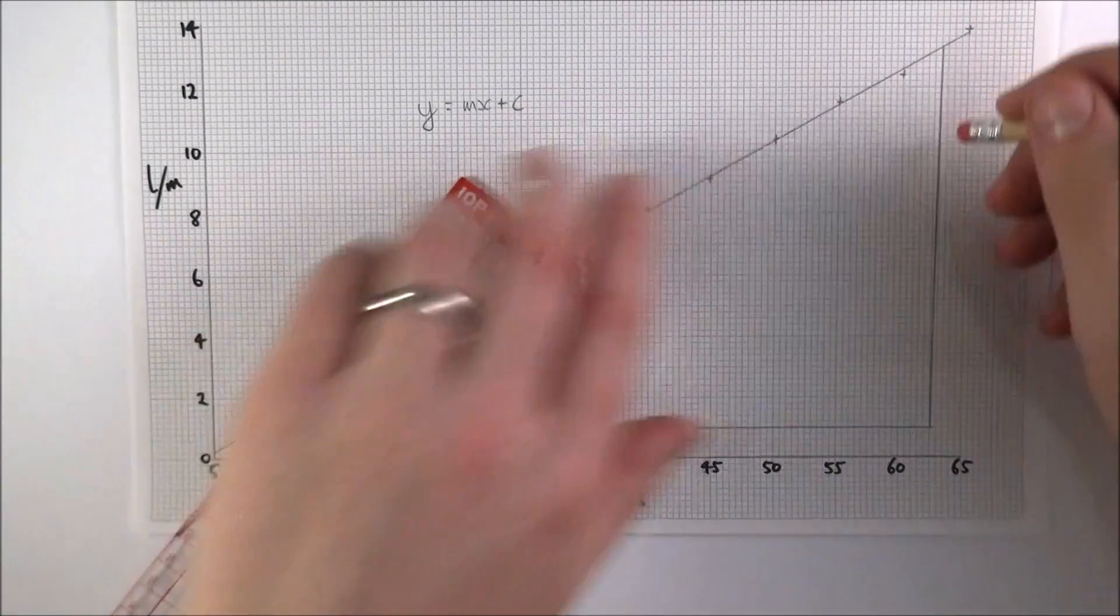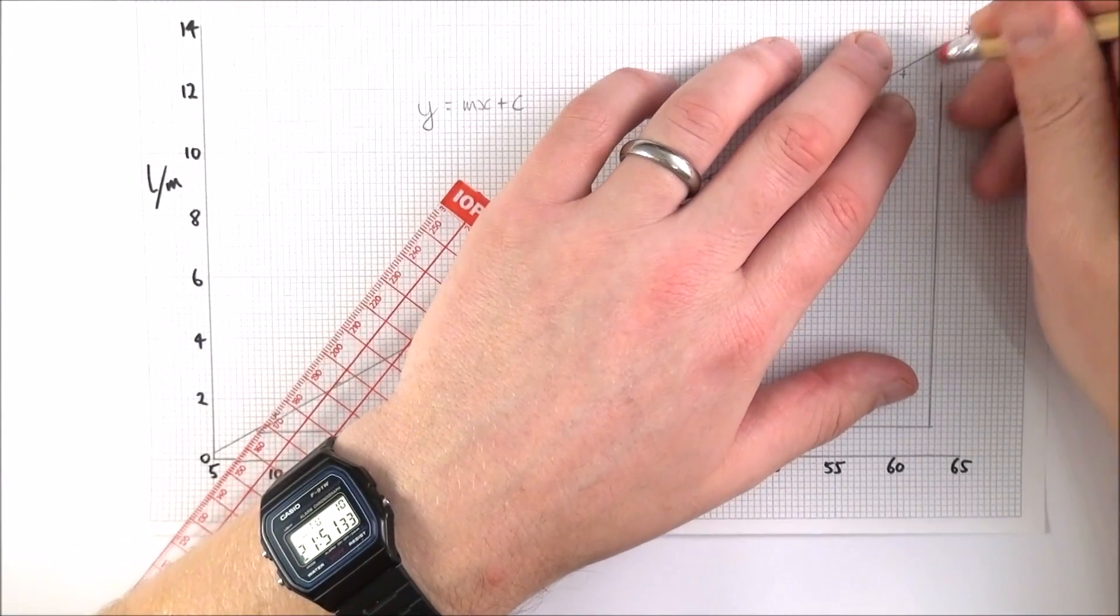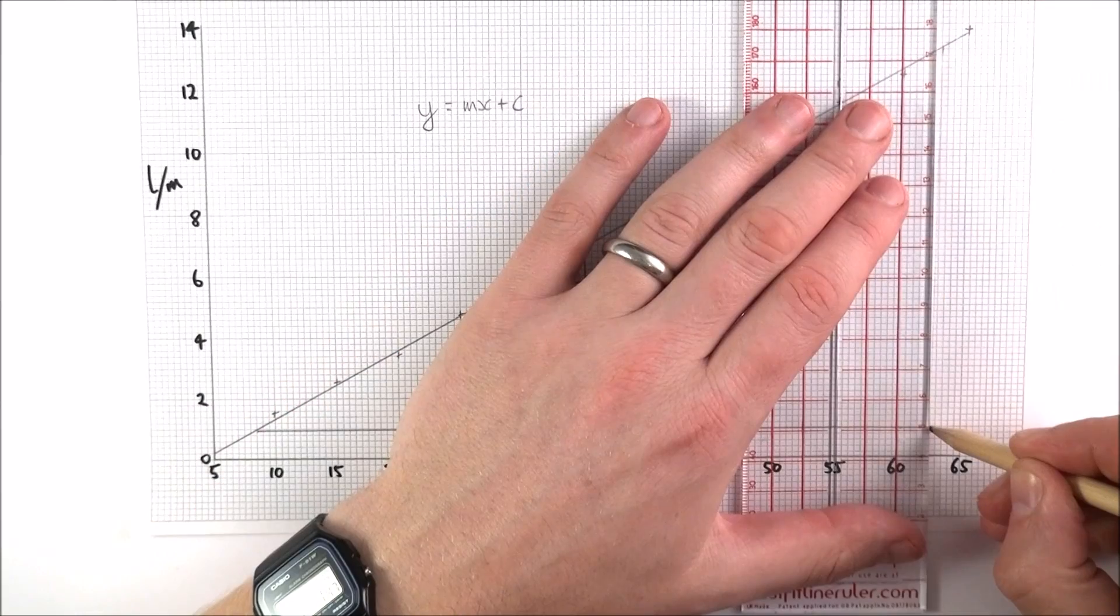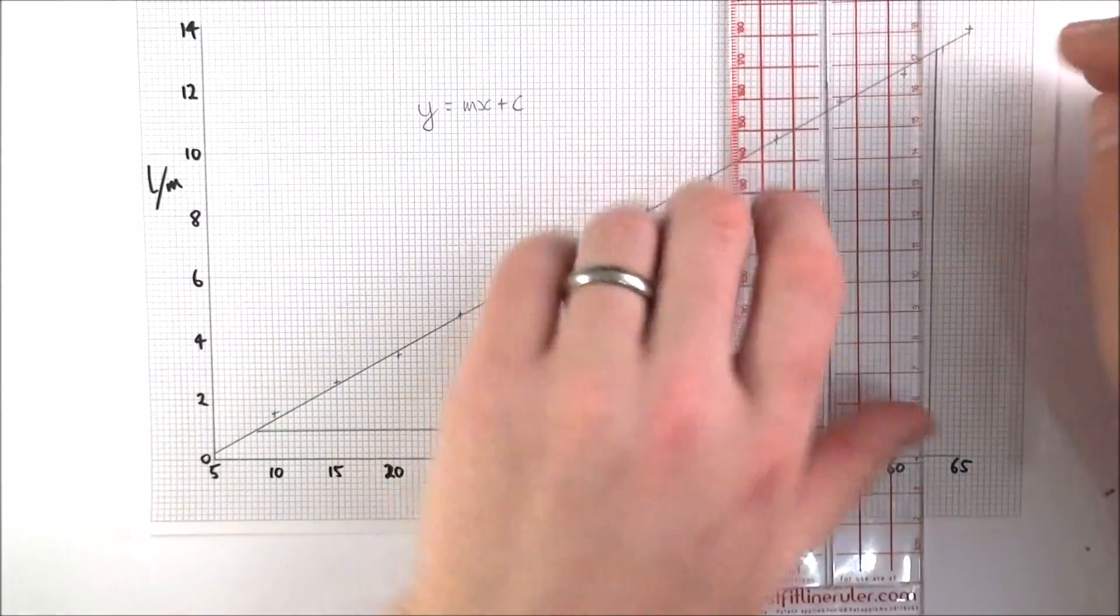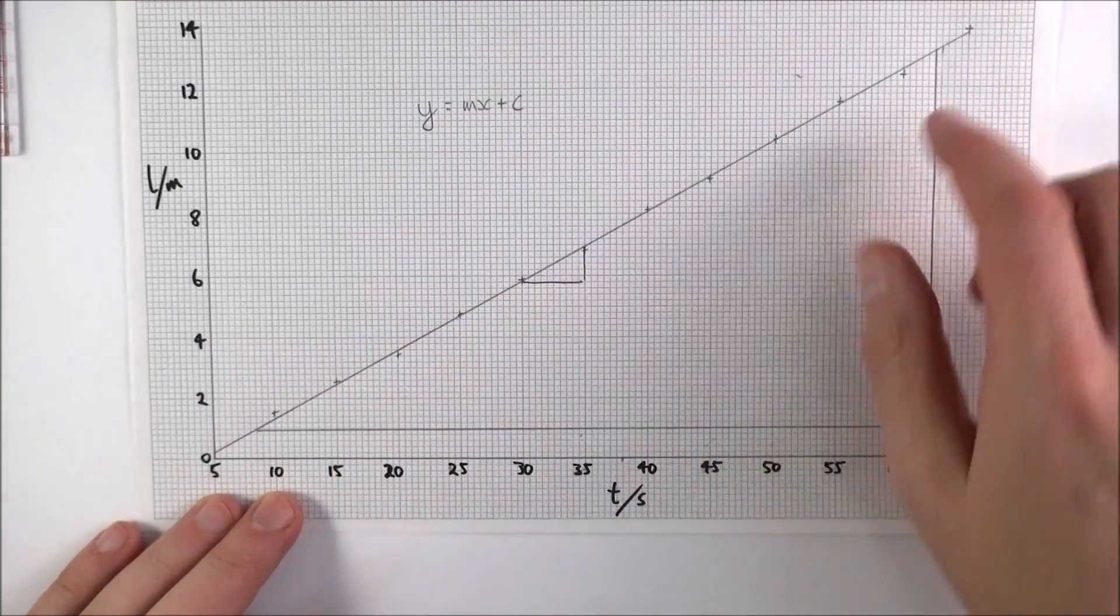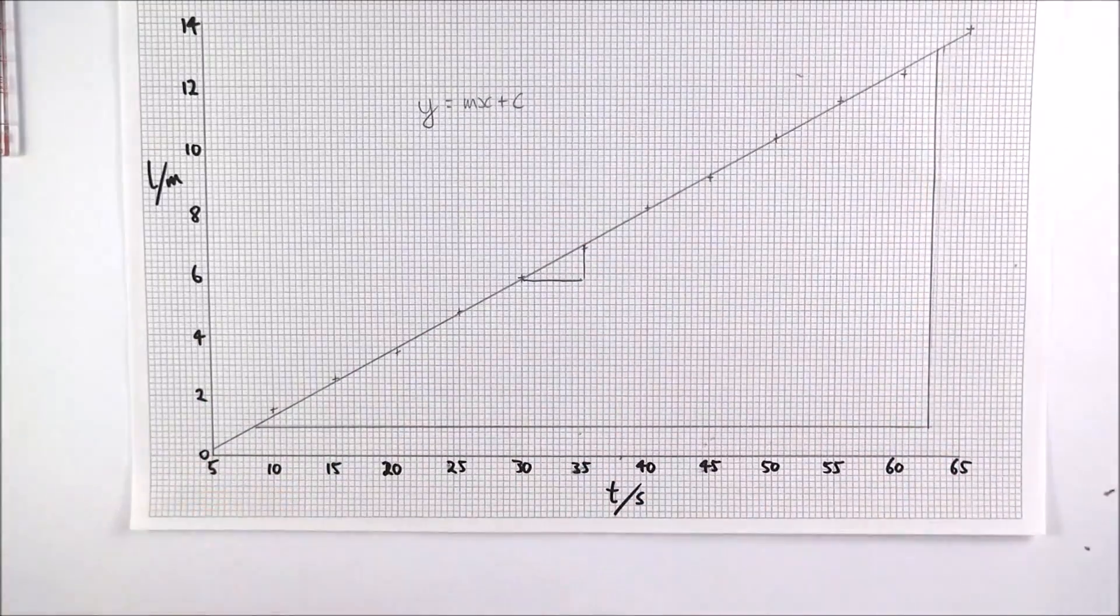Actually I made a bit of a mistake, that line is rubbish, let me just get rid of that. There we go, that's a bit better. So now I've got a large triangle drawn which is greater than half the length of this line.